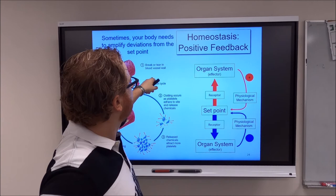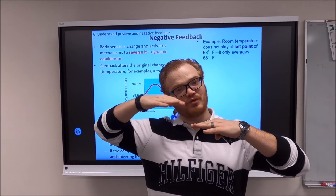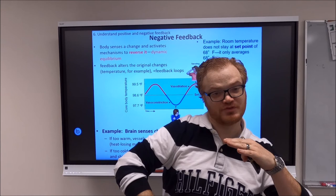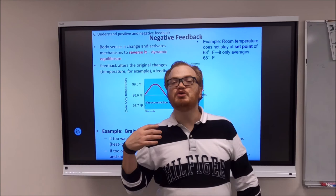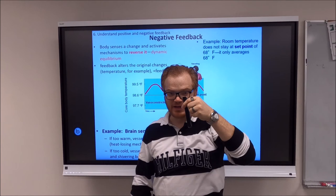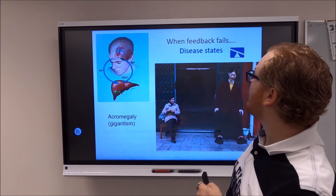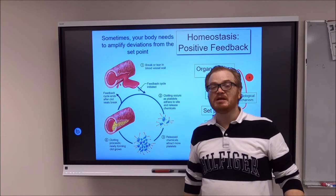Everything we've been talking about has been in reference to negative feedback systems. Your blood sugar rises, so you release insulin to bring it back down. Your body temperature drops, so you shiver to bring it back up. Your blood calcium levels dip, so your body takes steps to pull that blood calcium back up. You go anoxic, so you breathe to increase oxygen content. Negative feedback: something gets too high, your body brings it back down; something gets too low, your body brings it back up. There are also positive feedback systems.